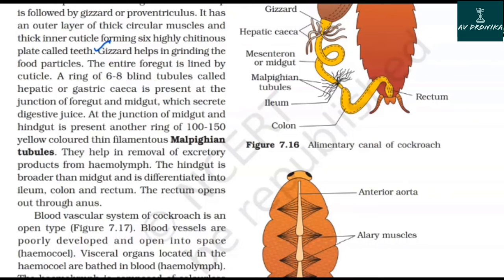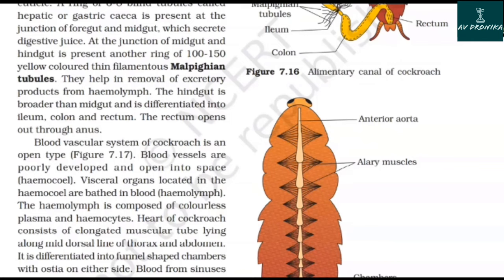At the junction of the midgut and hindgut, another ring of 100 to 150 yellow-colored thin filamentous Malpighian tubules is present. They help in the removal of excretory products from the hemolymph. The hindgut is broader than the midgut and is differentiated into ileum, colon, and rectum. The rectum opens out through the anus.